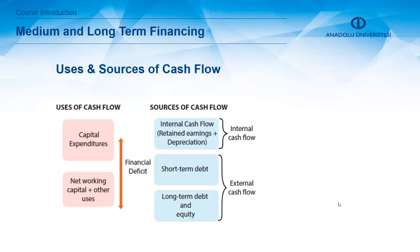The third factor is availability of security. The fourth is the existing capital structure of the company. Because if a company uses too much debt, it starts to only be able to access extra debt at a very high interest rate. So the existing capital structure affects how the future capital structure will be. Other factors include legal and tax issues and the approach of top management.